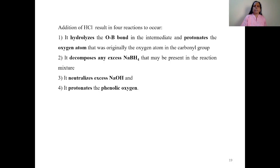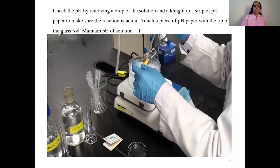Addition of HCl results in four reactions. First reaction, it hydrolyzes oxygen-boron bond in the intermediate and protonates the oxygen atom which is from that carbonyl group. So carbonyl oxygen gets protonated in this step. Also, it decomposes any excess of sodium borohydride that may present in the reaction mixture. It neutralizes excess of NaOH, that means it neutralizes alkali, and it protonates phenolic oxygen. This is the addition of HCl. Now after addition of HCl, you have to maintain pH at 1. So check that pH with the help of pH paper and make sure that reaction is acidic.